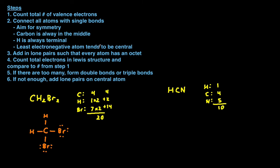Step two: connect all atoms with single bonds. Again, carbon is in the middle, so hydrogen and nitrogen attach to carbon with single bonds. Next step: add lone pairs such that every atom that wants an octet has an octet. Carbon currently only has four electrons around it, so we have to add two more lone pairs to give it an octet. Nitrogen currently only has two electrons from its bond, so we need to add three lone pairs to give it an octet. Hydrogen is already happy with two valence electrons.